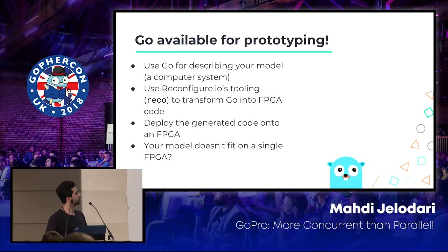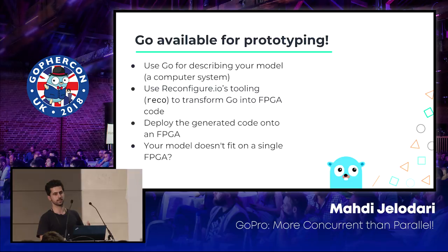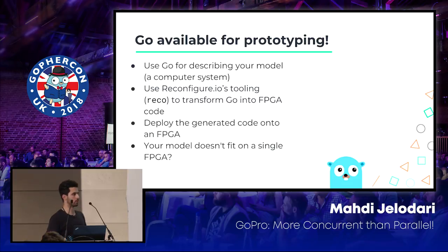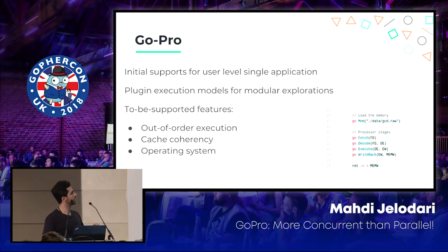If your model doesn't fit on one single FPGA, there's a scalability opportunity when deploying into the cloud. FPGAs in the cloud are provided by AWS F1, for example. So the framework is called GoPro.